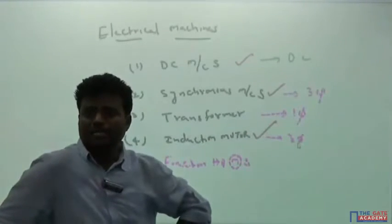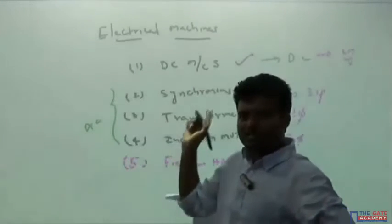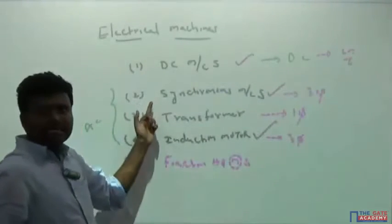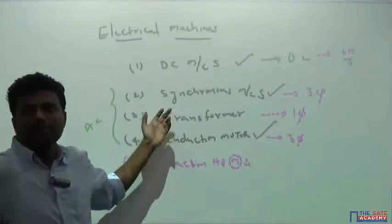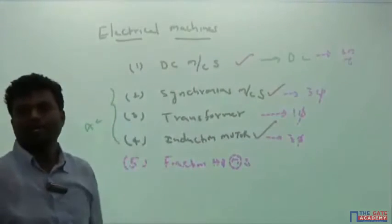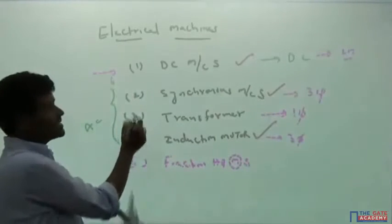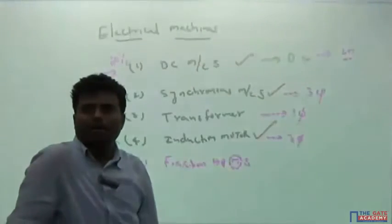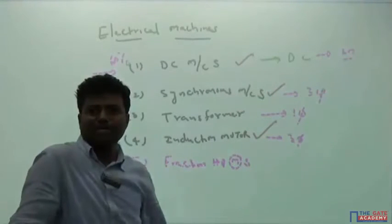For the GATE exam, you always get at least one question on DC machines — typically a two-mark problem, so you can get two to three marks guaranteed. Most other questions come from synchronous machines and transformers, where the marks can vary between two to five marks. When DC machines are done, about 50 to 60% of the syllabus is complete. The remaining topics — synchronous machines, transformers, induction motors, fractional HP motors — have a more limited syllabus compared to DC machines.